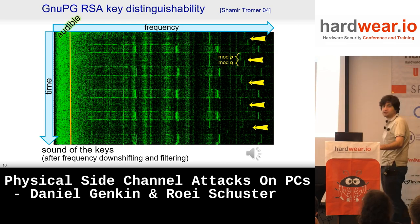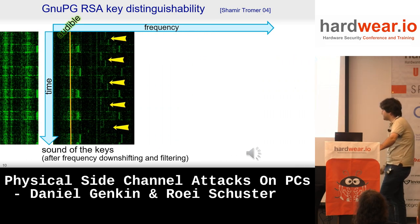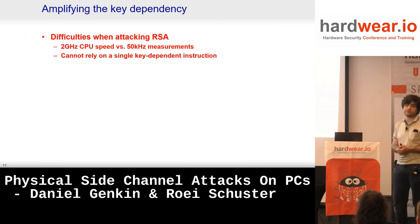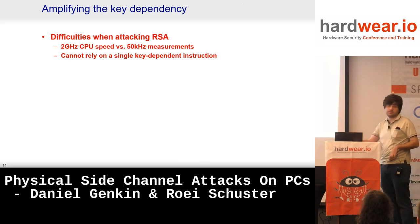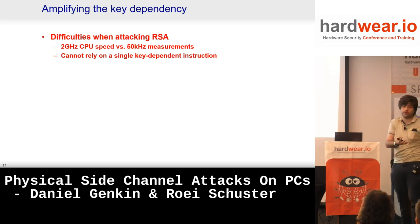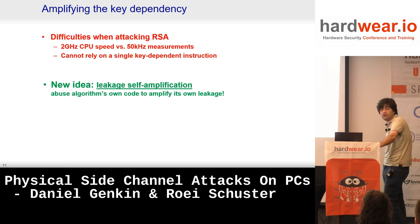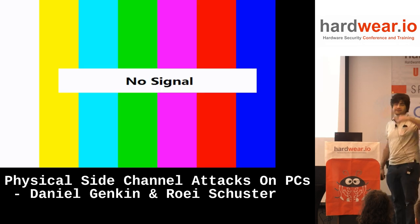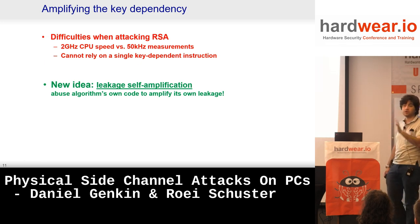Let's say we want to extract the keys out of it. The problem is that we have a 50 kilohertz acoustic signal — and I'm being generous, since audible range ends around 16 kHz — and we still have a 2 gigahertz computer. So how do we bridge these six orders of magnitude? The trick is to do some cryptanalysis. The idea is what's called leakage self-amplification: we shoot bad inputs into the algorithm in a way that amplifies the leakage to a point where we can detect it even without the means to see the signals directly.